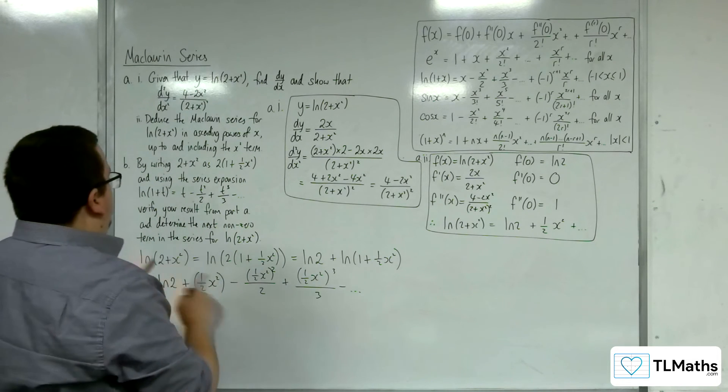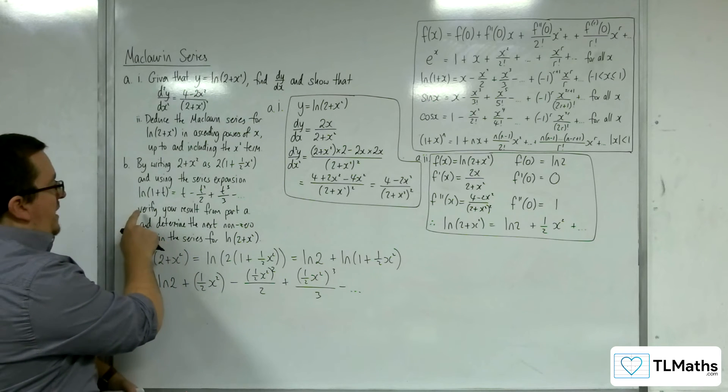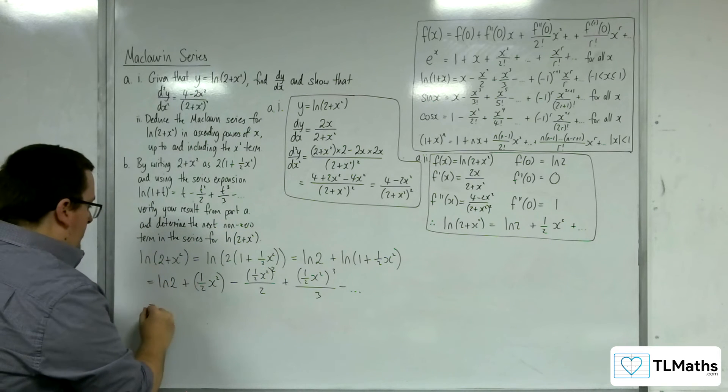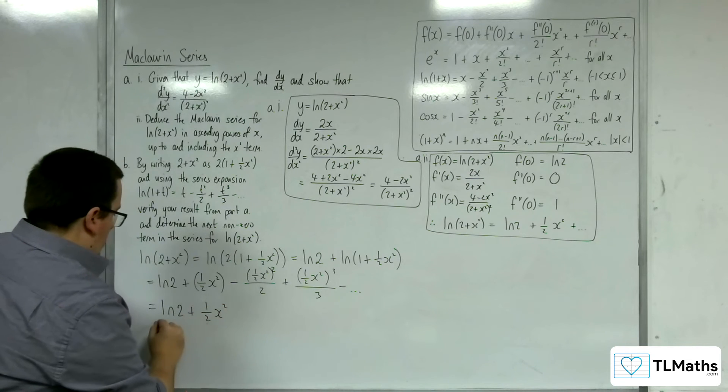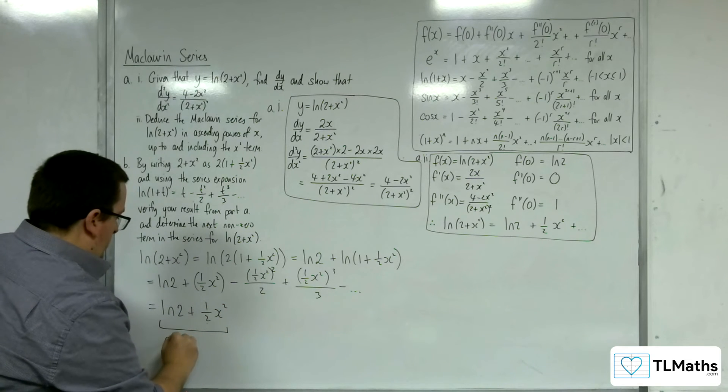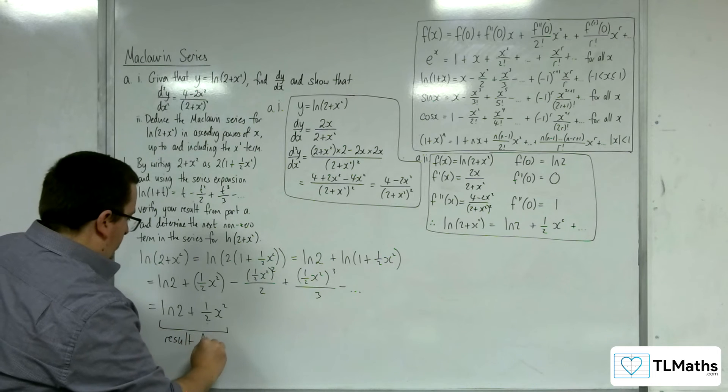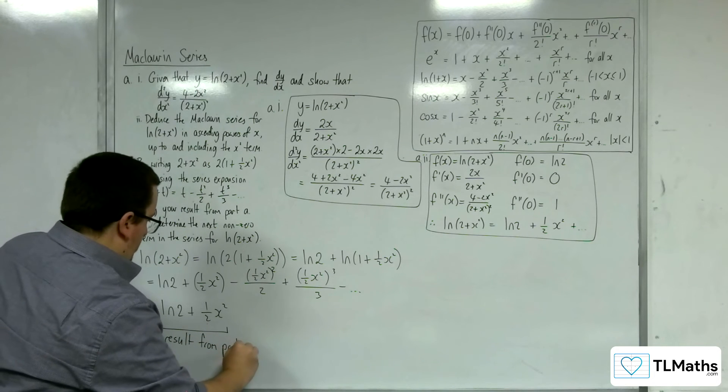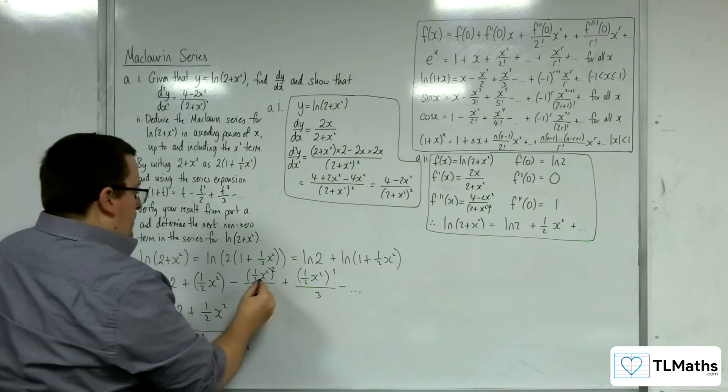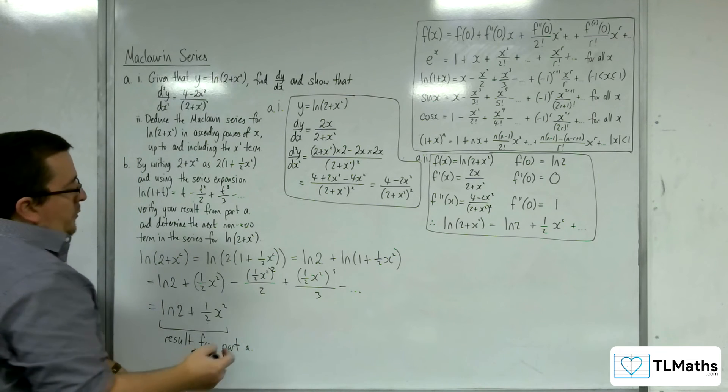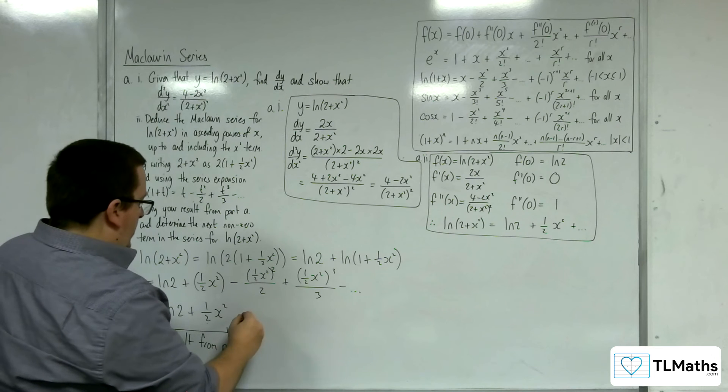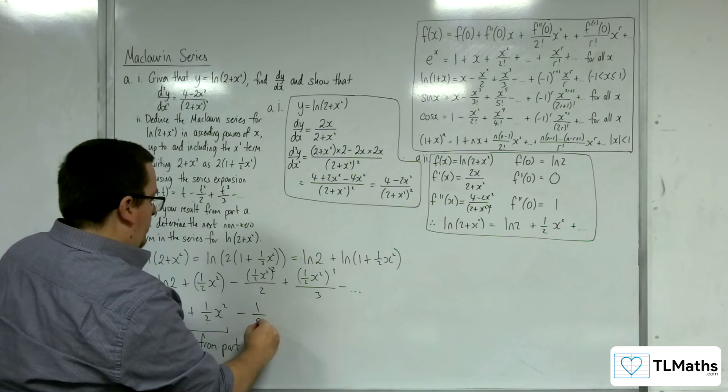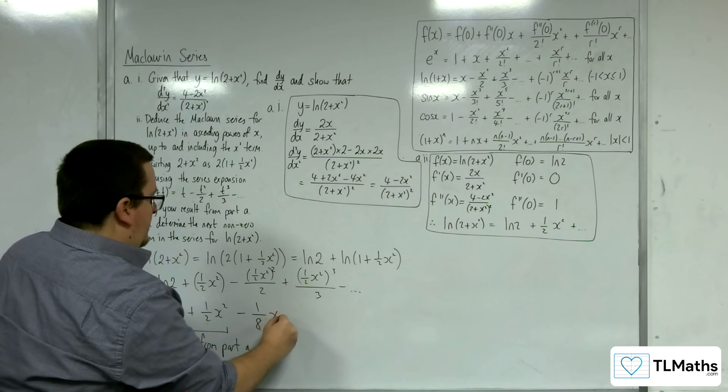Now, we don't really need to go as far as that, because it's just saying verify your result from part a. And that is result from part a. Then we've got this term here, so we've got take away 1 half squared, so 1 quarter divided by 2 is 1 eighth, so take away 1 eighth, and that's x squared squared, so x to the 4.